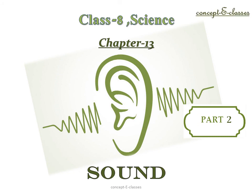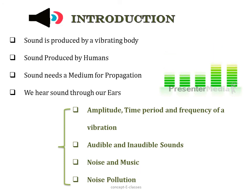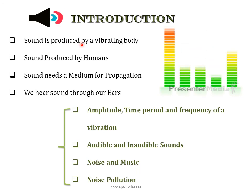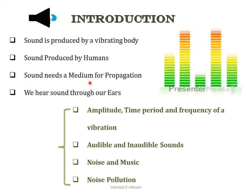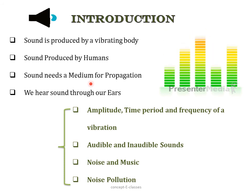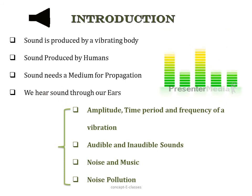This is Concept E Classes, and today we will deal with Chapter 13 of Class 8 Science: Sound Part 2. In Part 1, we saw how sound is produced by a vibrating body, how sound is produced in humans by the voice box or larynx, that sound needs a medium to travel through solid, liquid, and gas except vacuum, and how we can hear sound through our ears.